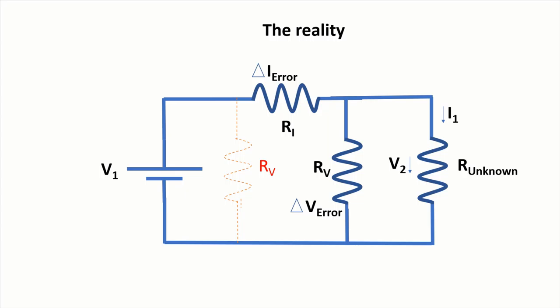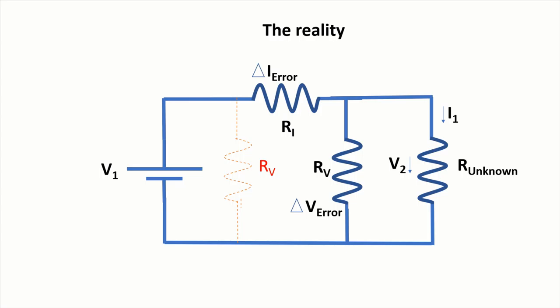And then depending on the size of both Rv and Ri, then we need to actually select where we need to position the voltage meter to disturb the measurement at least.